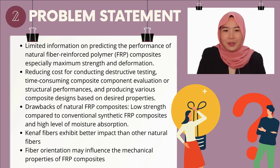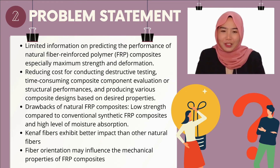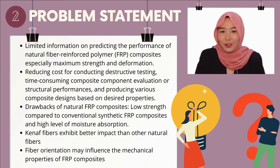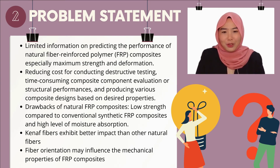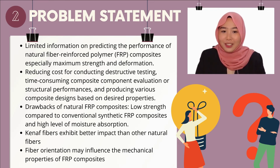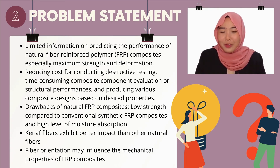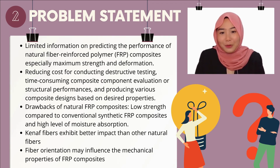Natural fibers are known as an environmentally friendly alternative to conventional fiber as reinforcement for polymer composite. However, their relatively low strength and high level of moisture absorption become the major drawbacks of natural fiber reinforced polymer composite. Previous studies show that kernel fiber exhibits better impact strength compared to other natural fibers, and the orientation of fiber reinforcement in a composite may influence its mechanical properties. Therefore, in order to study the effect of fiber orientation of kernel fiber reinforced polymer composite, modeling and simulation work needs to be conducted.